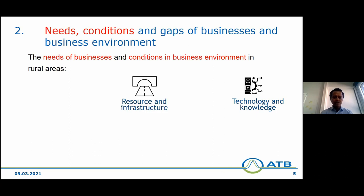The second sub-arena is resource and infrastructure, referring to the availability and access to infrastructure — facilities, communication infrastructure, and general services that businesses need to produce and provide their goods and services. The next sub-arena is training and education, referring to the types of actions and measures needed for capacity building, development of skills, and improving products and services to enhance the competitiveness of businesses.